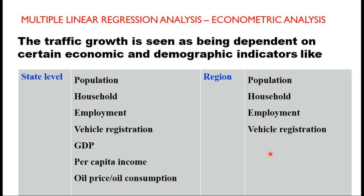The third approach is multiple linear regression analysis, which is also part of econometric analysis. Here traffic growth is seen as dependent on certain economic and demographic indicators at the state level or regional level. At the state level these can be population, households, employment, vehicle registration, GDP of the state, per capita income, and oil prices or oil consumption. Similarly, at the regional level the indicators can be population, household, employment, vehicle registration, and per capita income. The same parameters apply at both levels, but are measured at the respective state or regional scale.